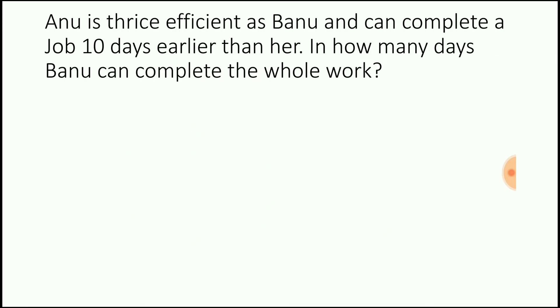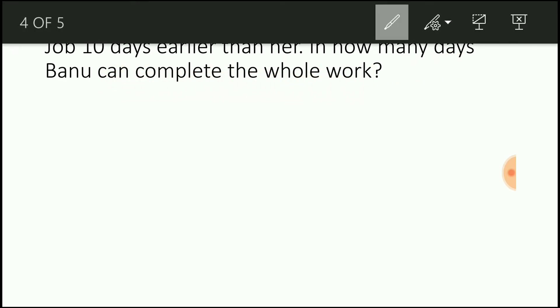Now let us move into example 2. Anu is thrice efficient as Banu and can complete a job 10 days earlier than her. In how many days Banu can complete the whole work? So Anu is thrice efficient as Banu. So the efficiency of Anu and Banu is 3 is to 1.